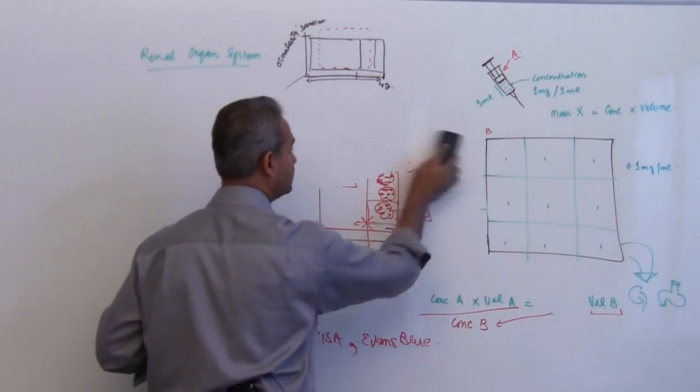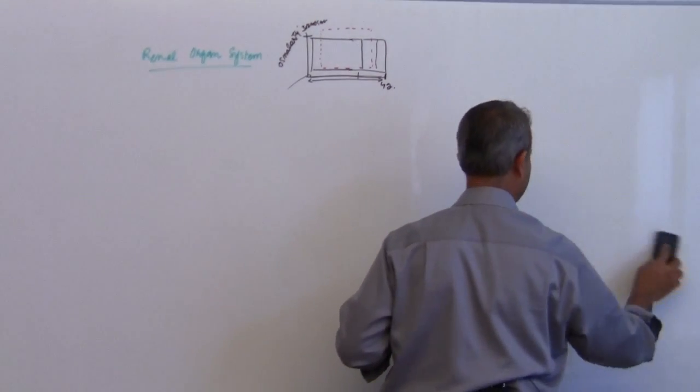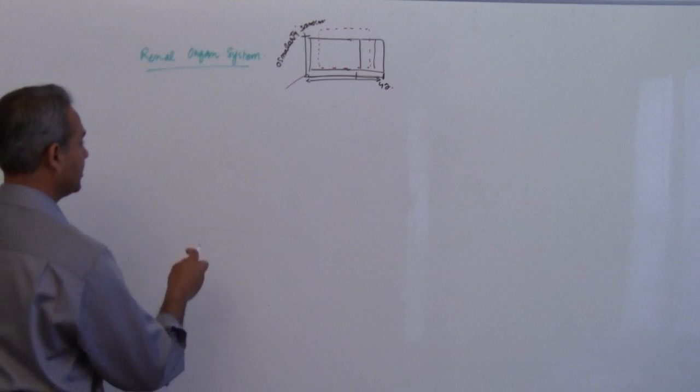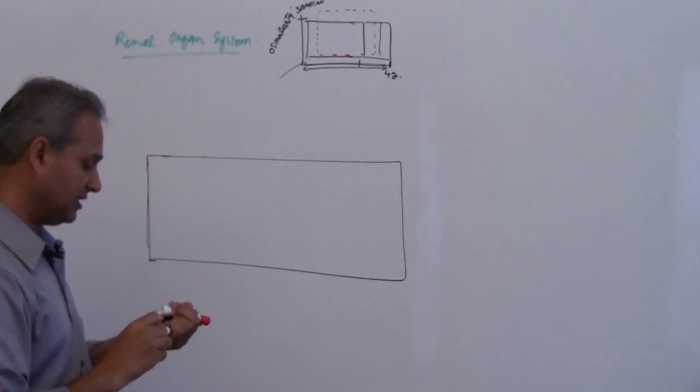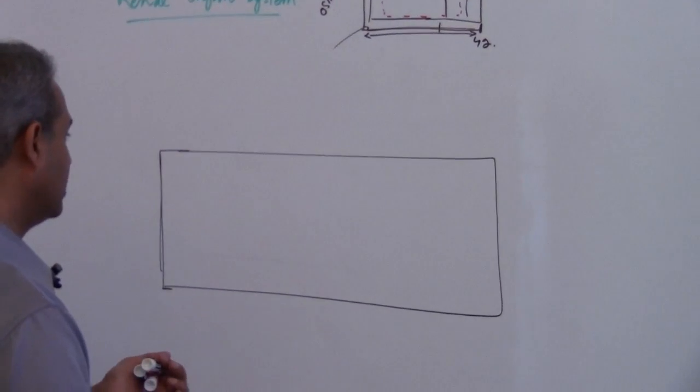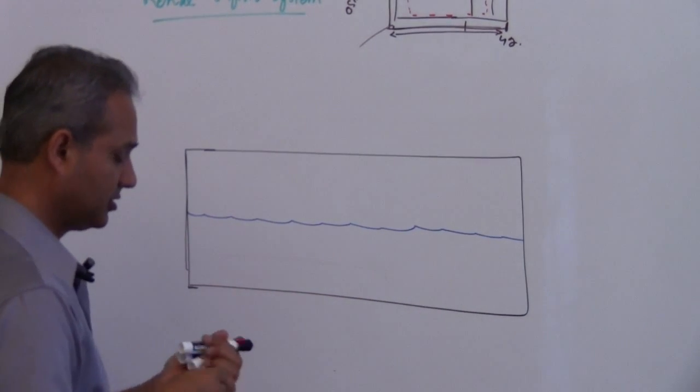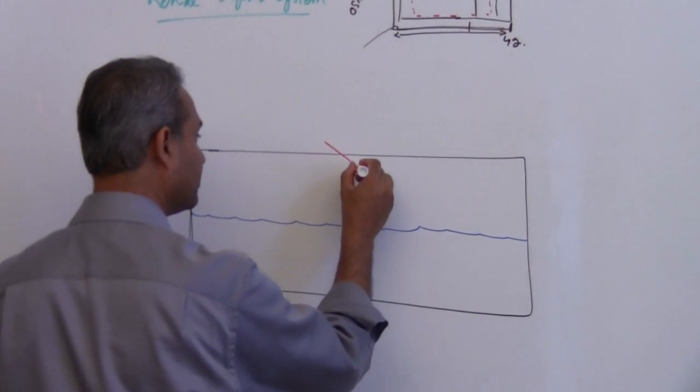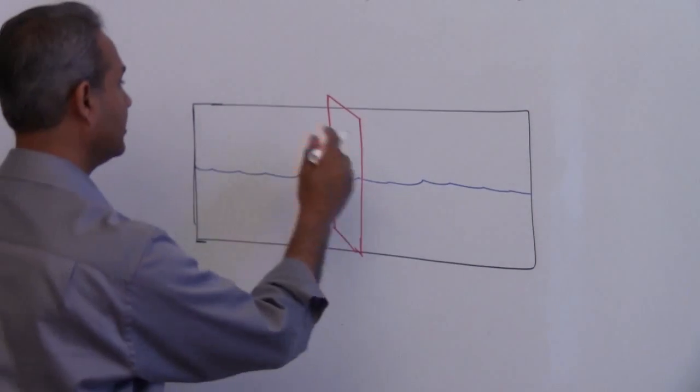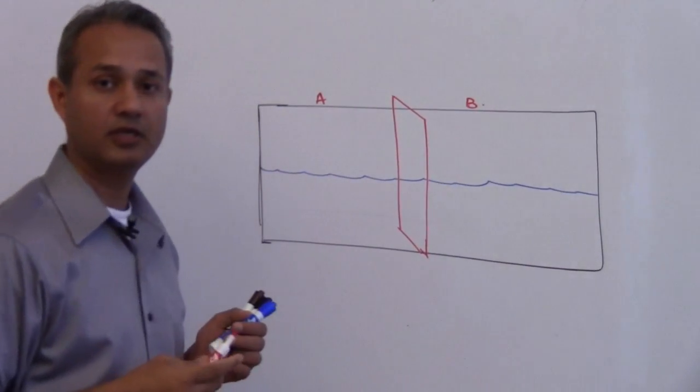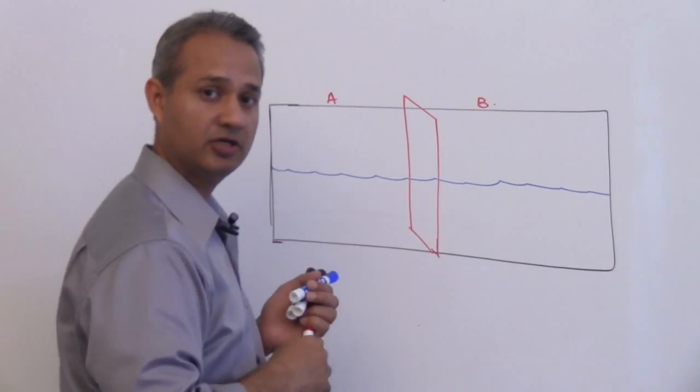Let's say we have a container. This container contains some water. It has a semi-permeable membrane dividing it into two compartments, A and B - a container with fluid and water, with a semi-permeable membrane separating the water into two compartments.